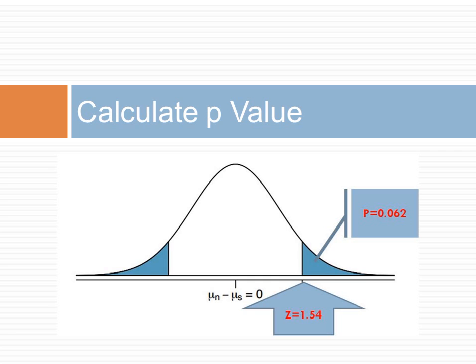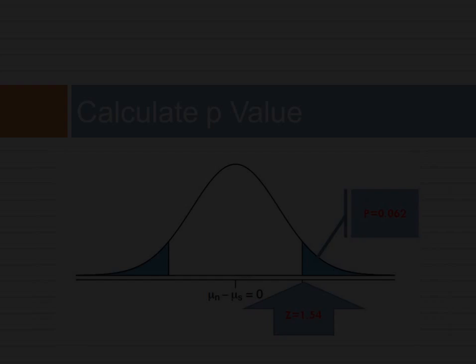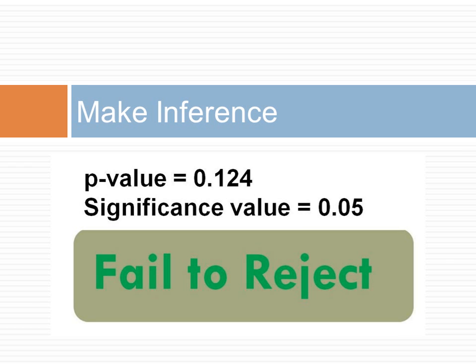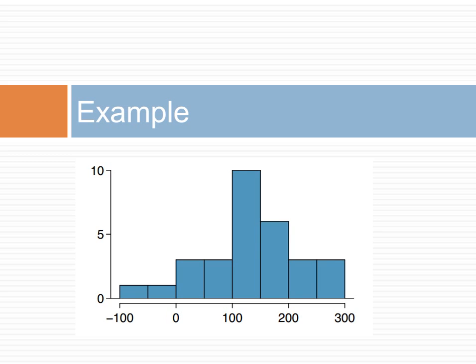We now look up the p-value associated with z of 1.54. The z score is 0.938 from the table, which gives us the p-value for the right tail as 0.062. Because this is a two-sided test, we want the area of both tails. We double this single tail to get the p-value of 0.124. The p-value of 0.124 is larger than the significance value of 0.05, so we fail to reject the null hypothesis.